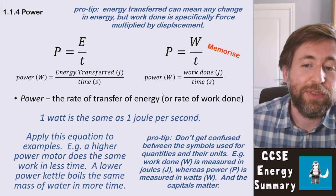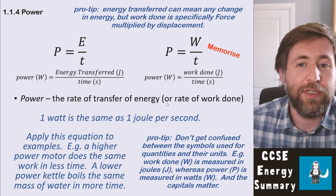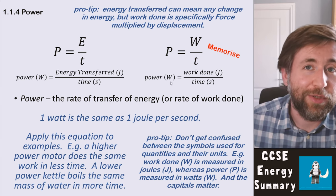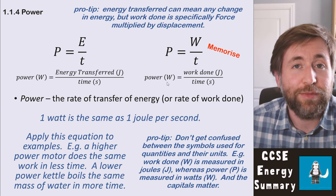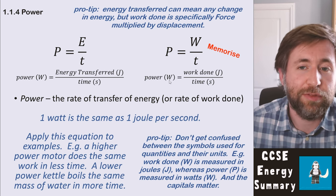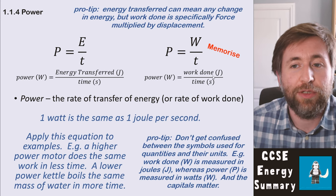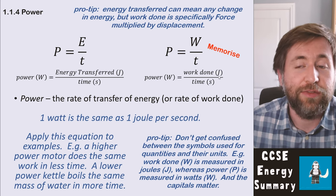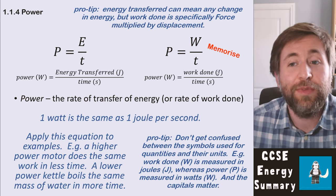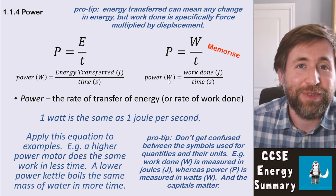Don't get confused between the symbols for quantities and their units. There's a lowercase w for work done and a capital W for the watt, the unit of power. Capitals matter: capital W for watts, capital J for joules, lowercase s for seconds.